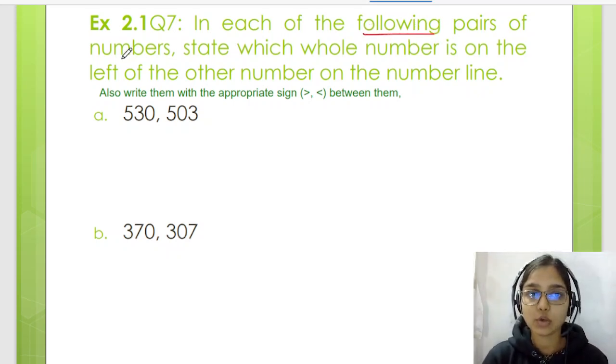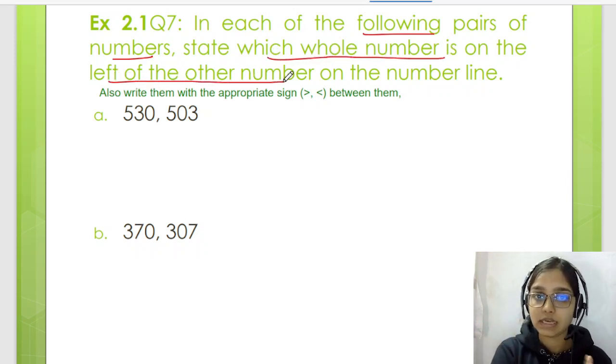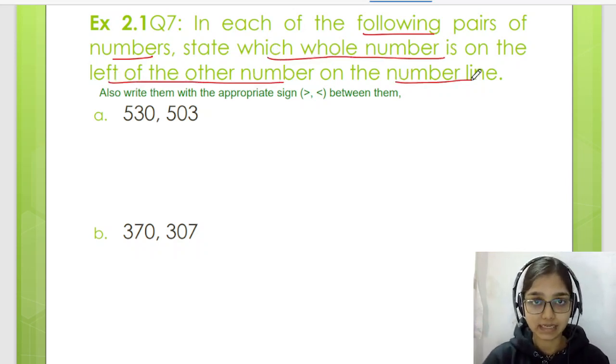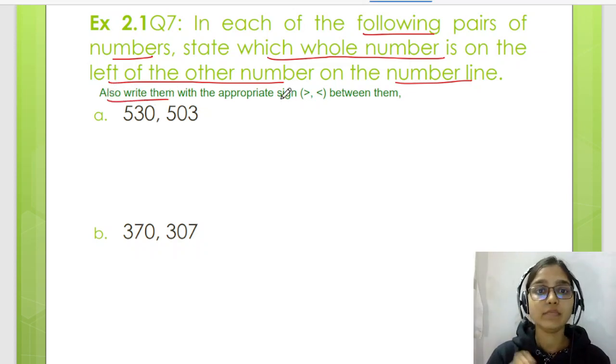In each of the following pairs of numbers, state which whole number is on the left of the other number on the number line. Also write them with the appropriate sign between them. This is greater than sign, this is less than sign.